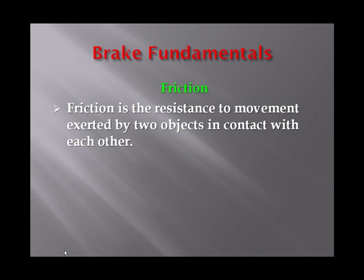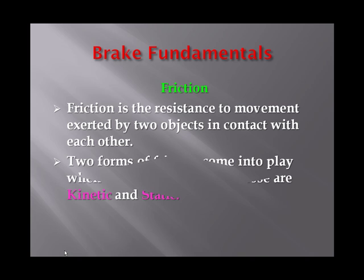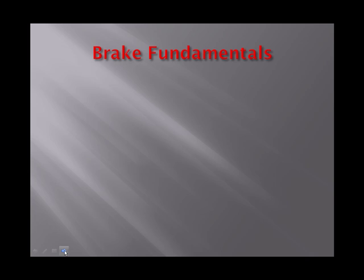Friction is the resistance to movement exerted by two objects in contact with each other. Two forms of friction come into play when controlling a vehicle: kinetic, or moving friction, and static, or stationary friction. The amount of friction or resistance depends on the materials in contact with each other, the smoothness of their rubbing surfaces, and the pressure holding them together.